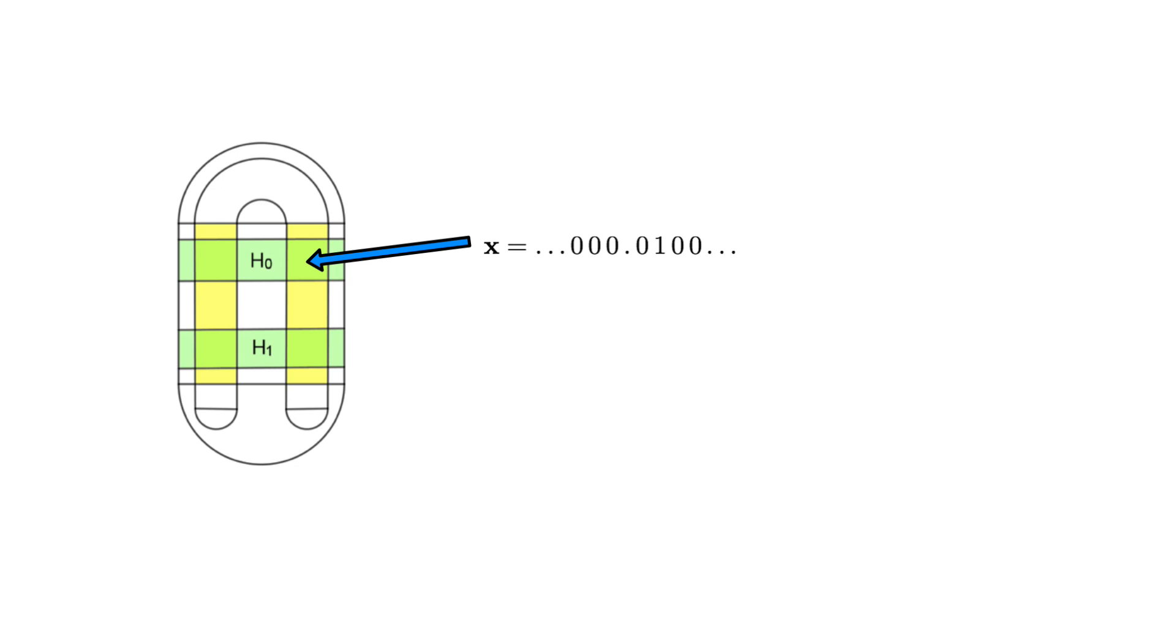For example, consider the sequence that has zeros up to a decimal point, a single zero, a single one, and then zeros henceforth. This sequence means that x0 lies in h0, x1 lies in h1, and every subsequent forward iterate of the map lies in the h0 strip. The entries before the decimal place indicate where the pre-images lie, or the backwards orbit.